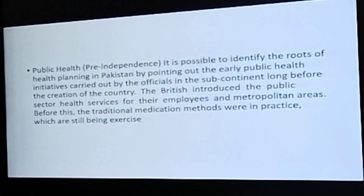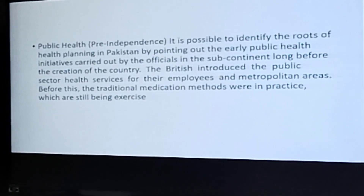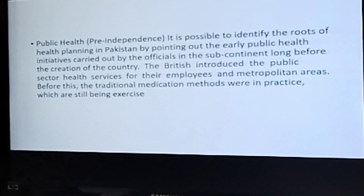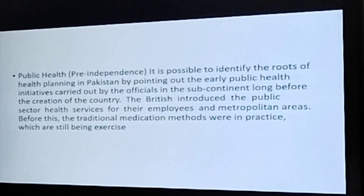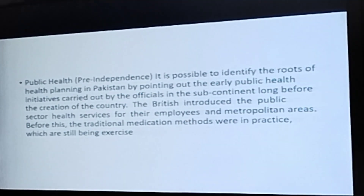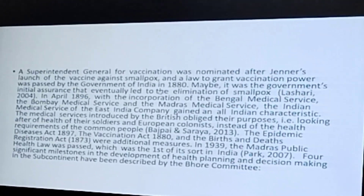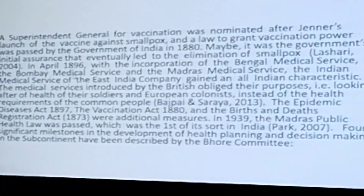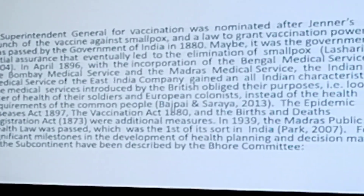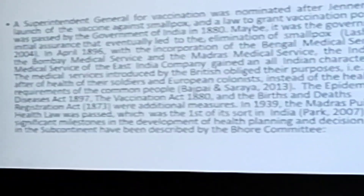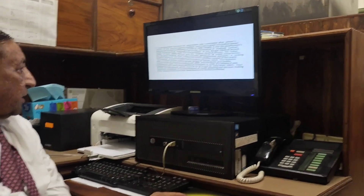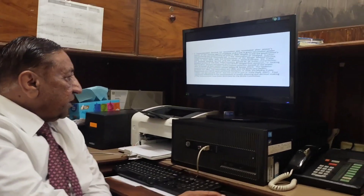In public health, three pre-independence health milestones are key: the Bhore Committee, the 1978 Medical Education Conference, and from 1955 to 2020, different phases of national health policy. The first initiative of the British government was to appoint a Vaccinator General in the subcontinent, leading to the elimination of smallpox. The Superintendent General for Vaccination was the highest post, and this ultimately led to the eradication of smallpox by 1979.